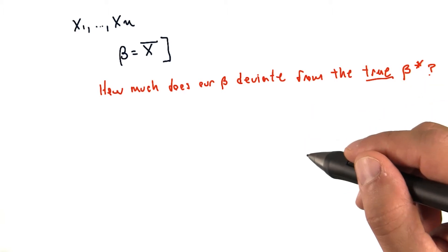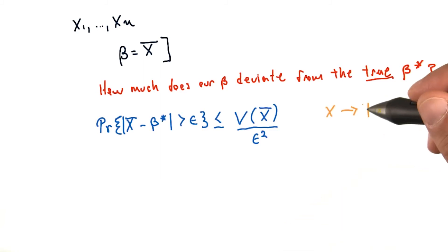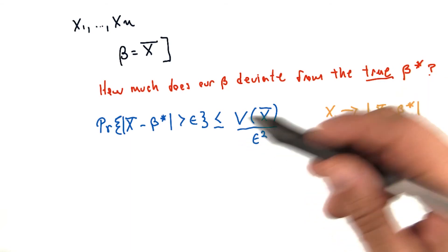Now, to calculate this, we can just directly use Chebyshev's inequality. Now, all we're doing is we're substituting x bar minus beta star with x. If we do that, we have this expression.